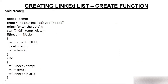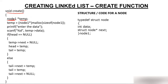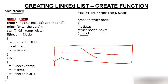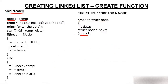In the create function, we have created a pointer of type node1. If there is no linked list yet, there is no head value. So above the main function, just below the structure definition, we will set things up.